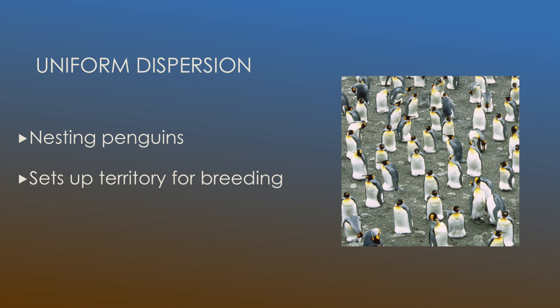In this picture on the right we see nesting penguins and they're all equally apart from each other and this leads to them setting up a territory that is useful to allow them to maintain their location and also the conditions that come with having a position like that such as access to food and other nutrients.